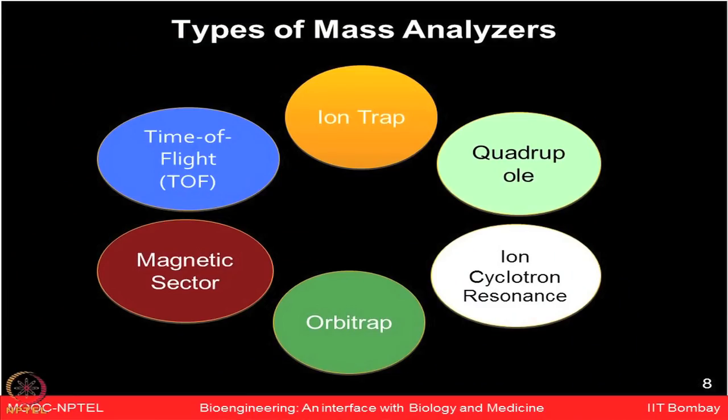There are different types of mass analyzers available: time-of-flight (TOF), ion trap, quadrupole, ion cyclotron resonance, Orbitrap, and magnetic sector, among others. Usually, people want to utilize different properties of mass analyzers in tandem — known as hybrid MS technology — using two different mass analyzers together. Examples include QTOF (quadrupole time-of-flight) or tribrid technology like the Orbitrap, which combines quadrupole, Orbitrap, and ion trap.